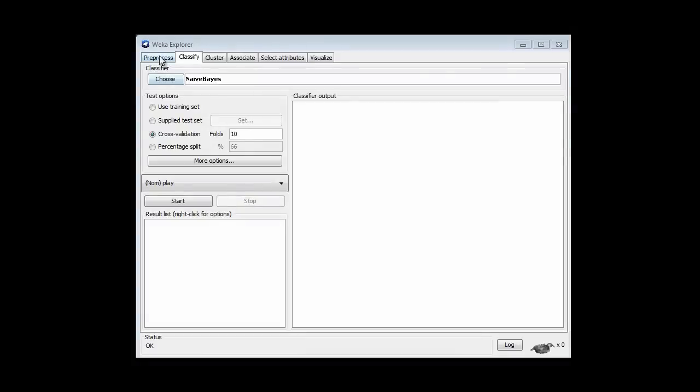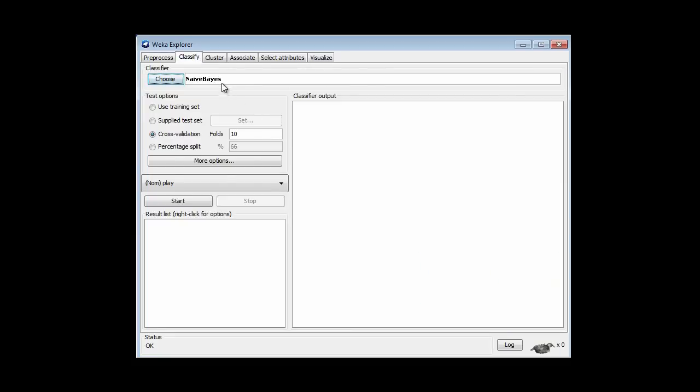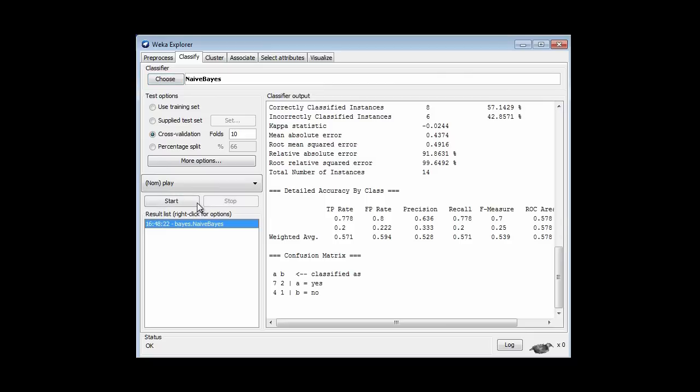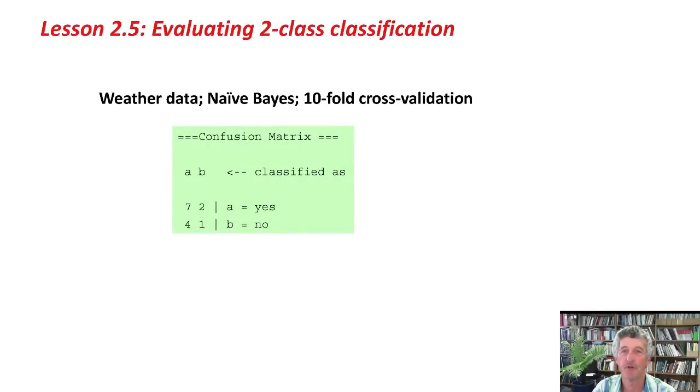Here in Weka, I've opened the weather data, 14 instances, a simple artificial dataset, and I'm going to classify it with Naive Bayes. I've selected Naive Bayes here, and there it is. I'm interested in the confusion matrix. In fact, I've put it over on the slide here. Here is the confusion matrix. You can see there's a's and b's, yes's and no's. There are seven a's that are classified as a's, and two a's that are classified as b's. That's incorrect. There's one b that's classified as b, that's correct, and four b's that are classified as a's, incorrect.